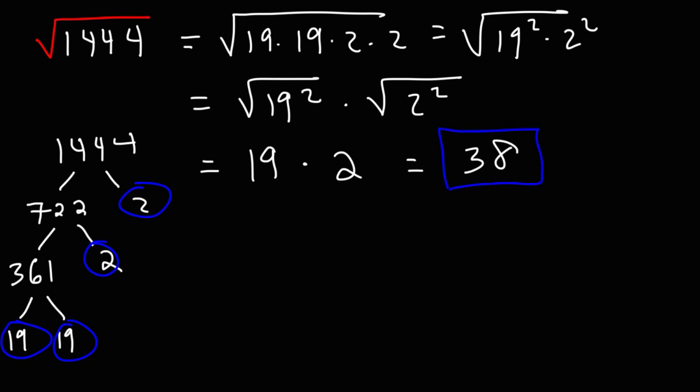And so the square root of 1,444 is 38. And you could check it. 38 squared is equal to 1,444. Thus, factoring is one of many methods that you could use to find the square root of a large number.